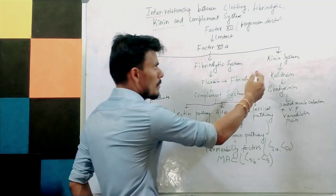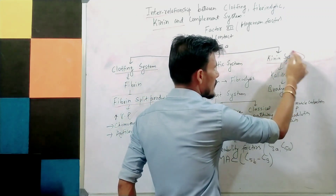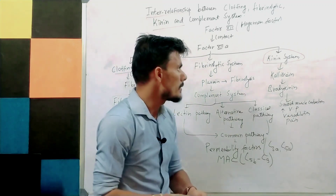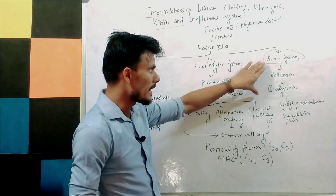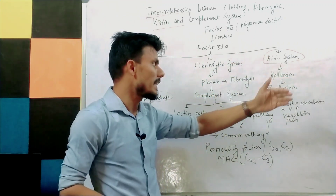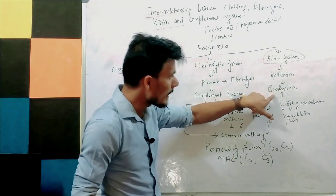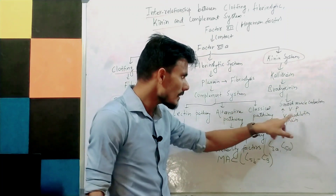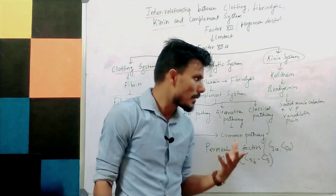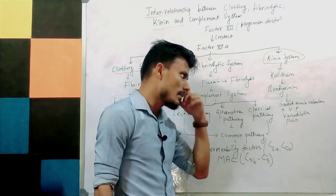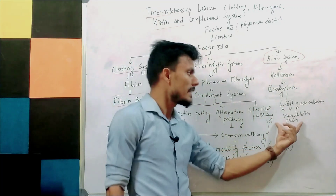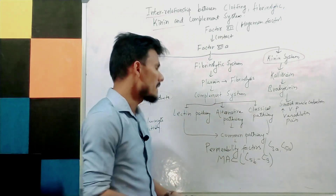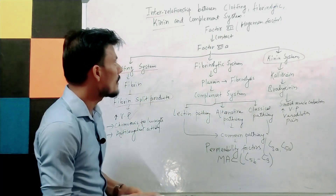Moving to the kinin system: in the kinin system there is formation of bradykinin from kallikrein, which is formed from pre-kallikrein. Bradykinin causes smooth muscle contraction, increased vascular permeability, dilation of blood vessels, and pain.